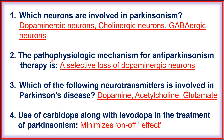If we recover the dopaminergic neuron or increase the level of dopamine in brain regions, then we protect against the symptoms of parkinsonism. Question three: which neurotransmitters are involved in Parkinson's disease? Dopamine, acetylcholine, and glutamate neurotransmitters are involved in Parkinson's disease.